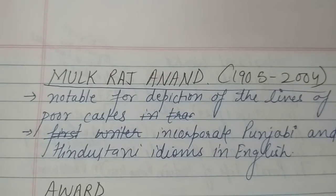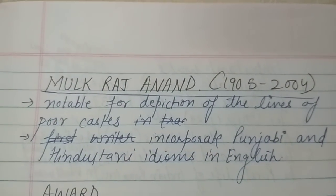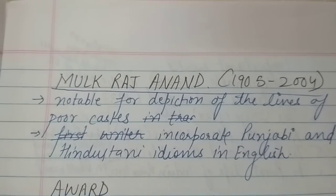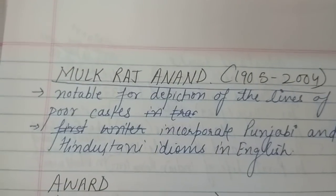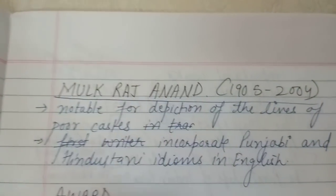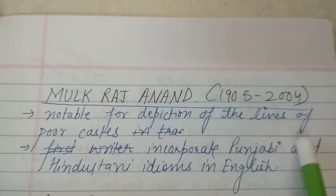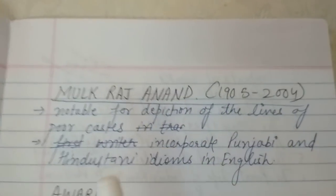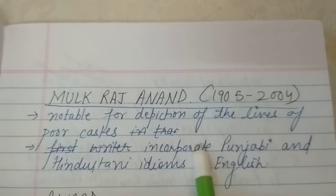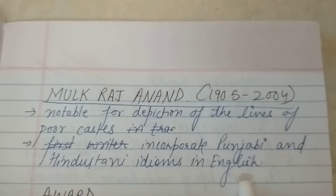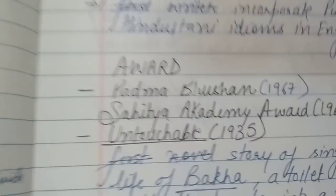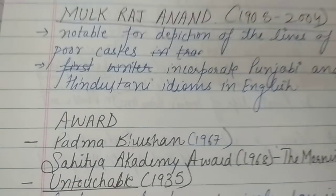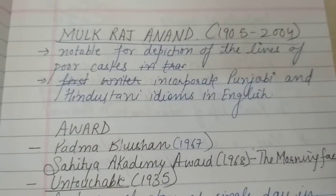Mulk Raj Anand's time span was from 1905 to 2004. He is also known as India's Charles Dickens, as like Dickens he depicted the lives of poor people in society. He is notable for depicting the lives of poor castes and for incorporating Punjabi and Hindustani idioms in English. He received the Padma Bhushan in 1967 and the Sahitya Akademi Award for his book The Morning Face in 1968.